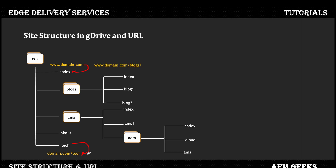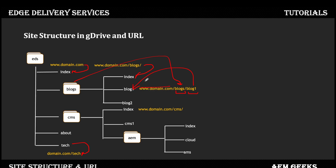To access the blog section, the landing page of that section is the index document. So when you hit domain/blog/ it renders that index page. If you want to hit any other page, you use the folder path and the document name — for example, domain/blog/blog1, where 'blog' is the folder name and 'blog1' is the document name in Google Drive. That's how the URL is formed.